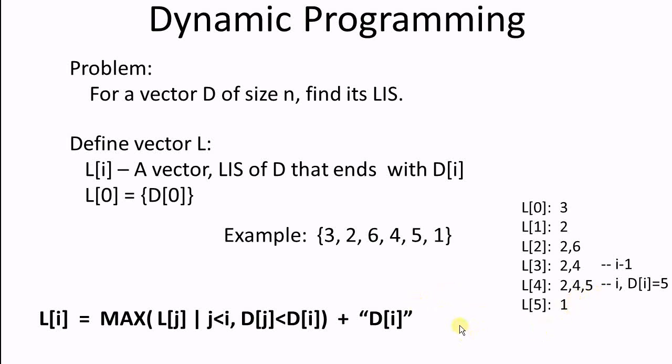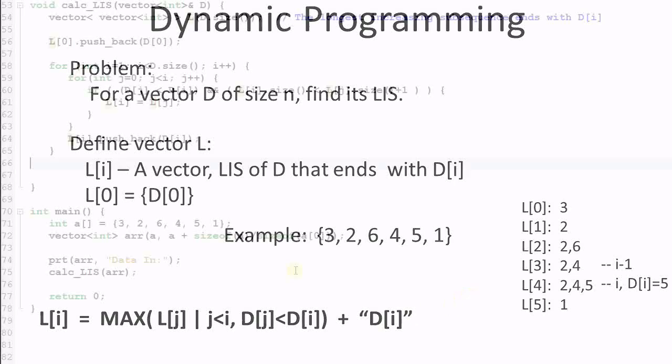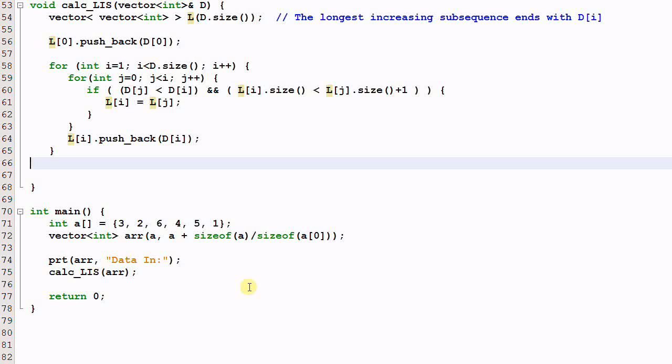So this is the algorithm. If it is still not clear to you, I'm sure it will be more clear when you look at the code. This is the C++ implementation of the algorithm. In the main function, I create a vector of int, and then pass the vector to a function called CalcList, which calculate the longest increasing subsequence. So this function CalcList is where the algorithm is implemented. As you see, the code is quite compact. It only has about 10 lines of code.